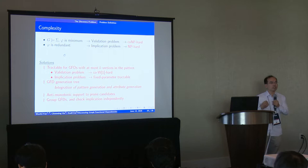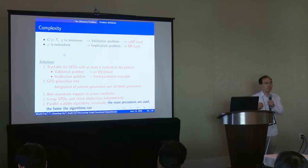We also define an anti-monotonic support to prune the candidates during the discovery. To compute the cover of the set, we will group the GFDs and check implications independently. And we provide parallel scalable algorithms. Intuitively, the more processors we use, the faster the algorithm will run.